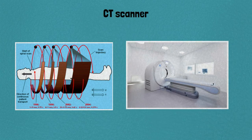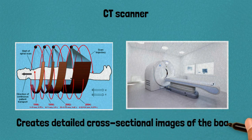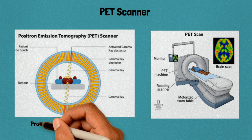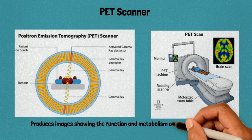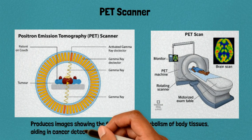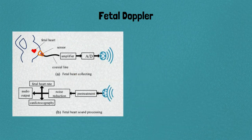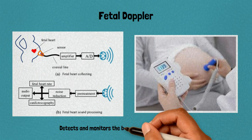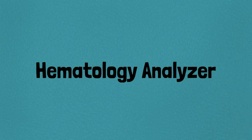18. CT scanner: provides detailed cross-sectional images of the body for diagnosing various conditions. 19. PET scanner: produces images showing the function and metabolism of body tissues, aiding in cancer detection. 20. Fetal Doppler: detects and monitors the fetal heartbeat during pregnancy.